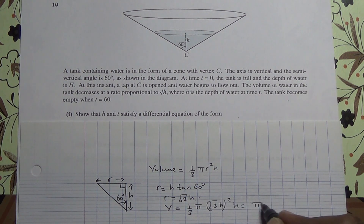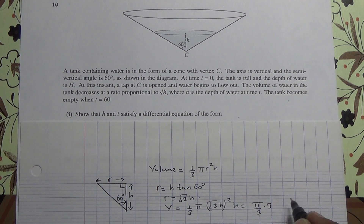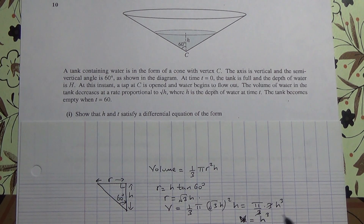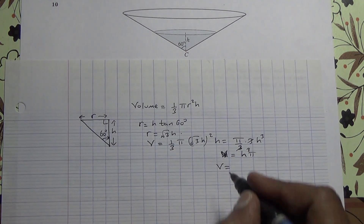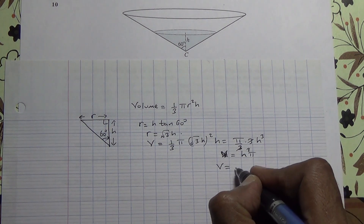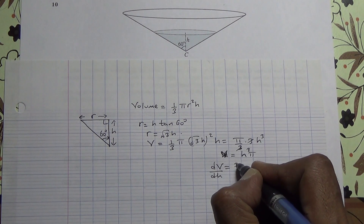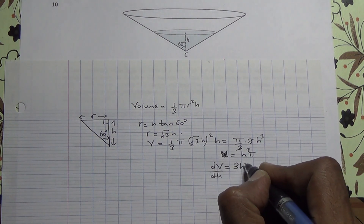That's going to leave us with pi over 3 times 3h squared times h, giving us h cubed. So V is equal to pi h cubed. Now, if we have V equals pi h cubed, we can find dV/dh. That's going to give us 3 pi h squared. So this is the volume with respect to the height.